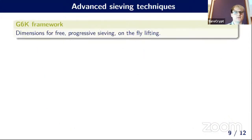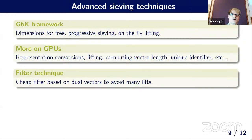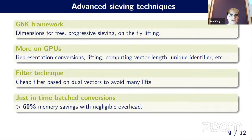The implementation is built on the General Sieve Kernel framework, providing dimension-for-free progressive sieving and on-the-fly lifting. Almost all expensive operations were moved to the GPU, including representation conversions and lifting. A cheap filter technique on dual vectors was introduced to avoid many lifts, and by cleverly timing representation conversions, significant memory was saved — about 60 percent memory savings per vector.